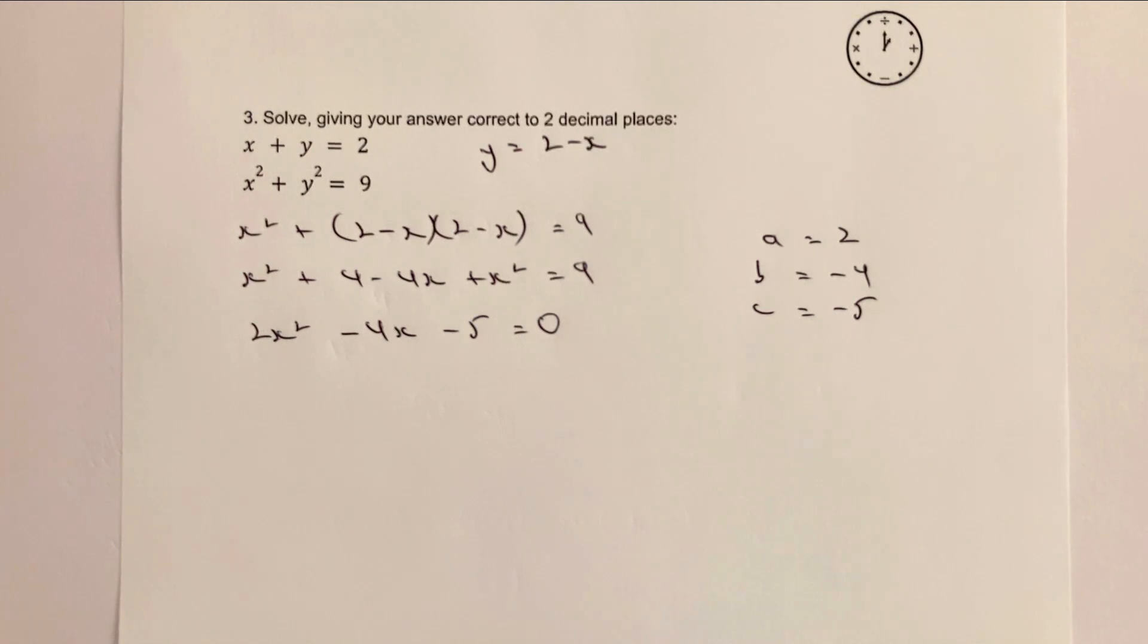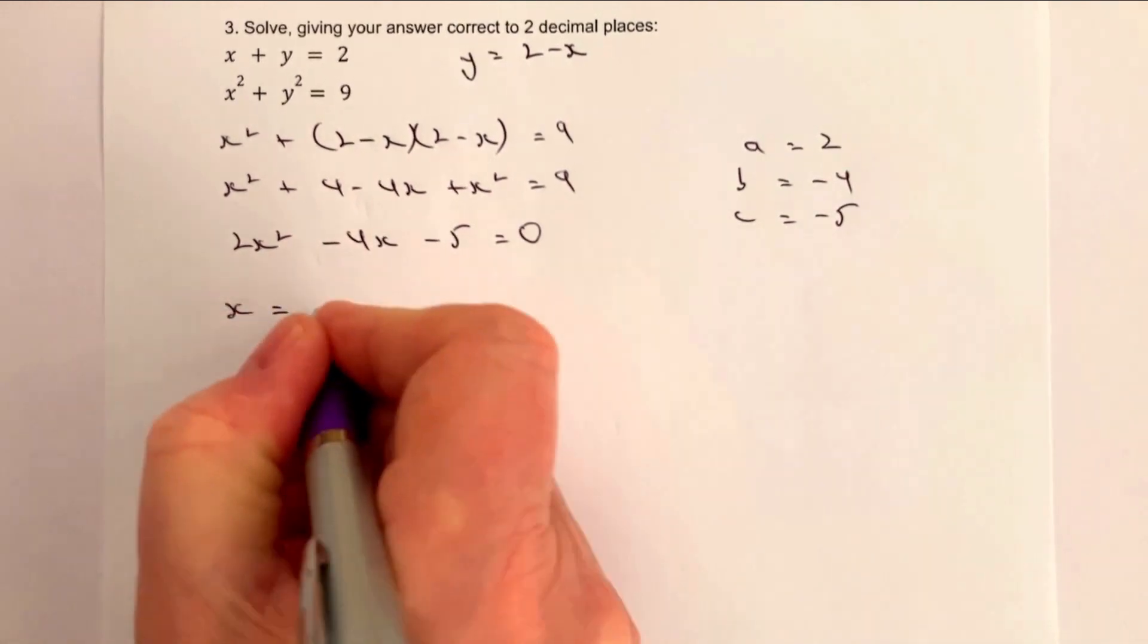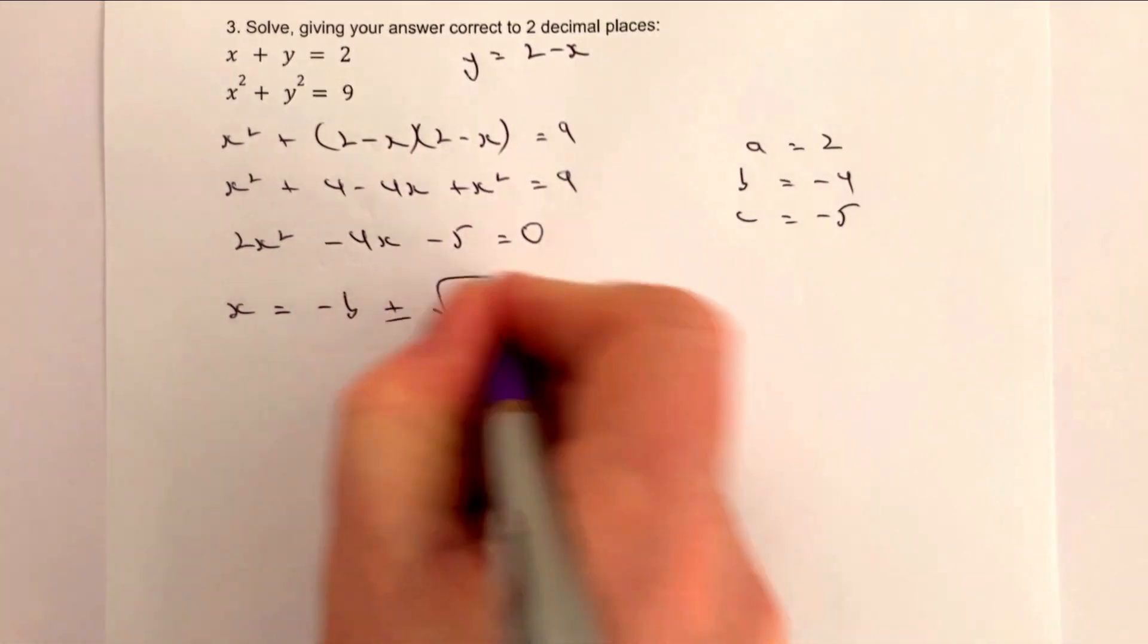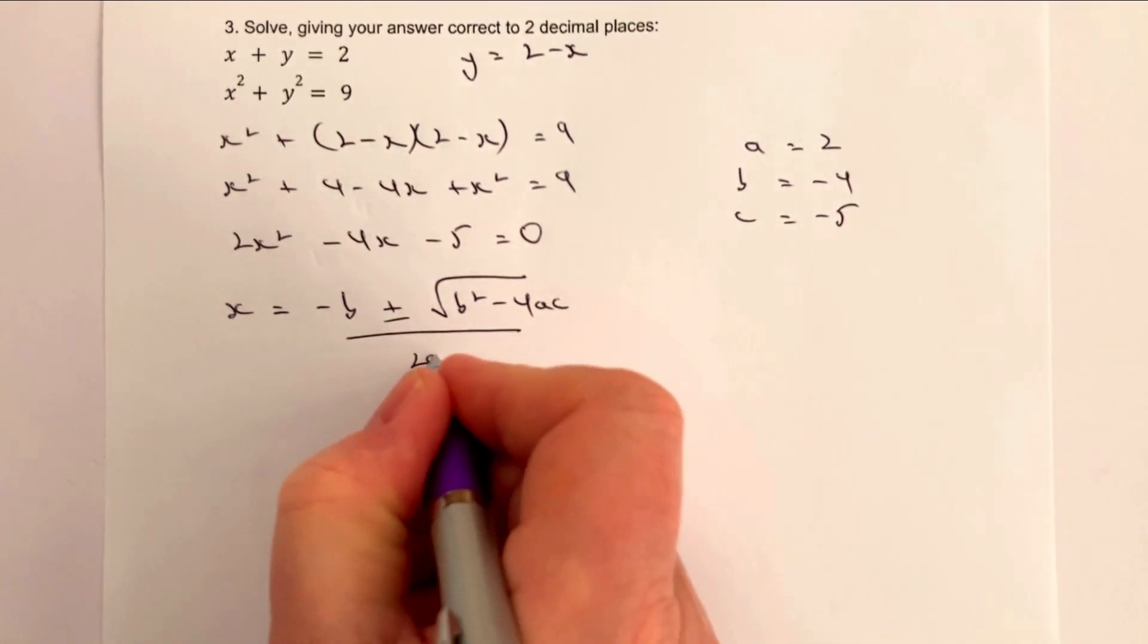Then really it is a case of just putting this directly into the formula itself. I'm going to write the formula out as x equals minus b plus or minus the square root of b squared minus 4ac all divided by 2a.